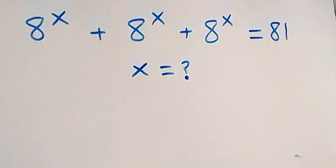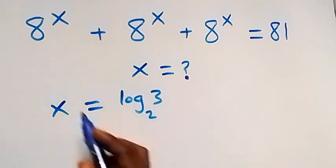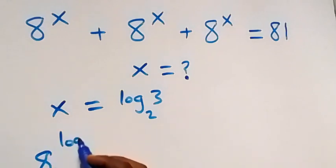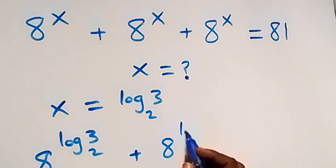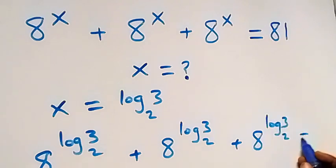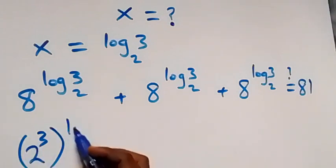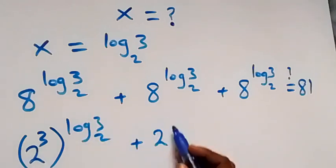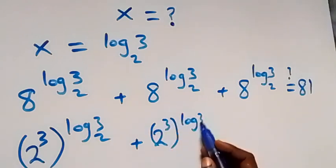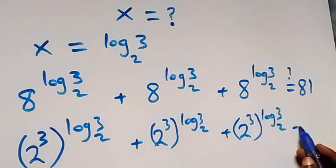Now let's verify that this satisfies the original equation. Substituting x equals log 3 to base 2, the equation becomes 8 raised to power log 3 base 2, plus 8 raised to power log 3 base 2, plus 8 raised to power log 3 base 2, equals 81. Writing 8 as 2 raised to power 3, each term becomes 2 raised to power 3, itself raised to power log 3 base 2.